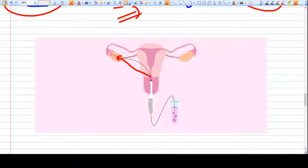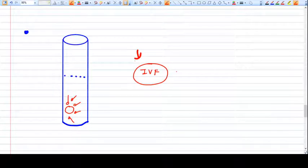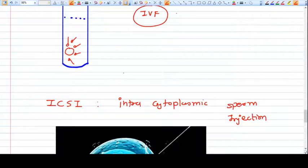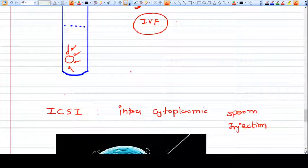Now what we do in the test tube: we wash the ova and put multiple sperm into that test tube. The sperm will then fertilize the ova. This is the normal IVF procedure. What is increasingly becoming popular is ICSI.